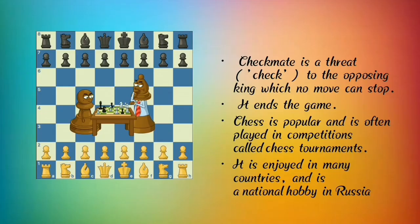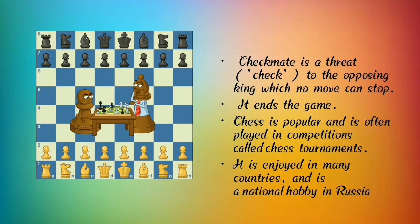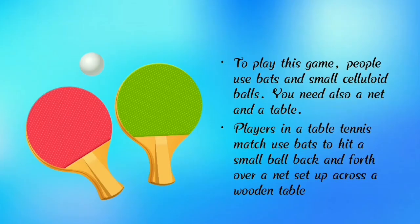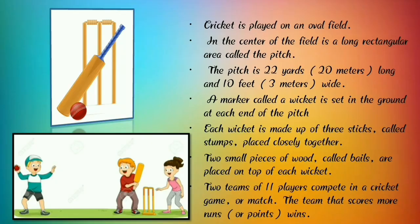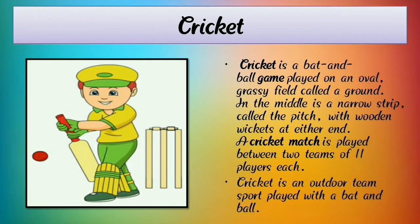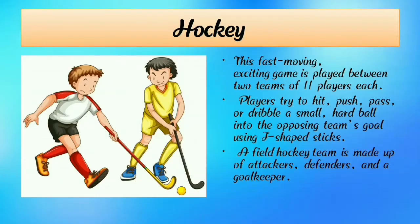Chess is a very interesting mind game played on a square board with 64 smaller squares, and it is the national hobby of Russia. Table tennis is also called ping pong — a very interesting game. Cricket is a very popular and interesting game played with ball and bat. Children, in today's lecture we learned about many types of games and their names.